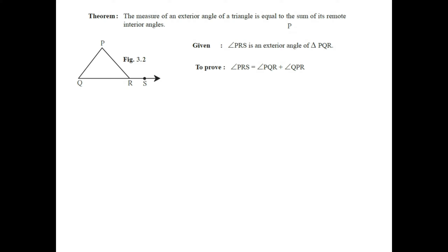To prove this, we use the property studied in earlier standards: the sum of all angles of a triangle is 180°. For triangle PQR, angle PQR + angle QPR + angle PRQ = 180°. We call this equation number one.